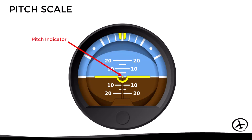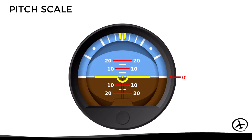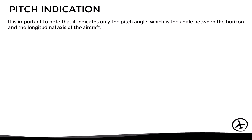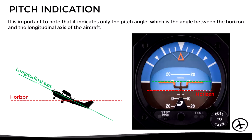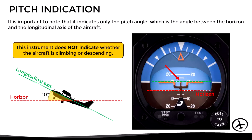Now let's look at the pitch scale. The pitch angle is indicated by the center point of the miniature aircraft — in this case, the point is right on the horizon line, indicating a pitch of zero degrees. On the pitch scale, the long lines represent increments of 10 degrees of pitch either up or down, while the short lines represent increments of five degrees. The instrument indicates only the pitch angle, which is the angle between the horizon and the longitudinal axis of the aircraft. In this example, the pitch indicator is at the 10-degree nose-up mark.